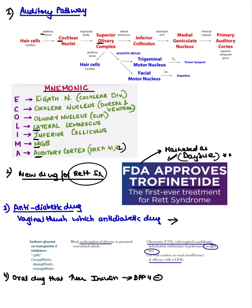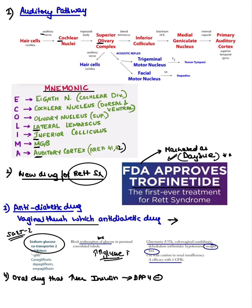The third question: which anti-diabetic drug is associated with vaginal thrush? That is the SGLT2 inhibitor — sodium glucose co-transporter 2 inhibitor. It blocks the reabsorption of glucose, resulting in increased glucose excretion in urine, which leads to vulvovaginal candidiasis and UTI.